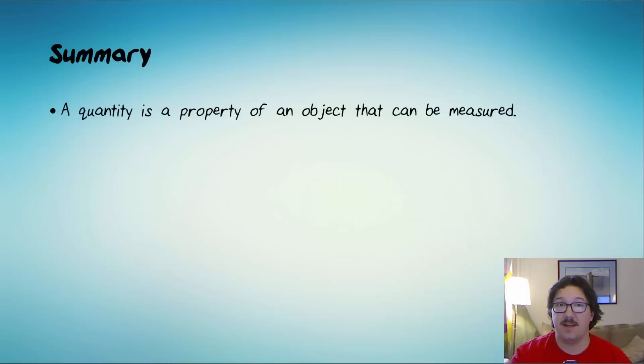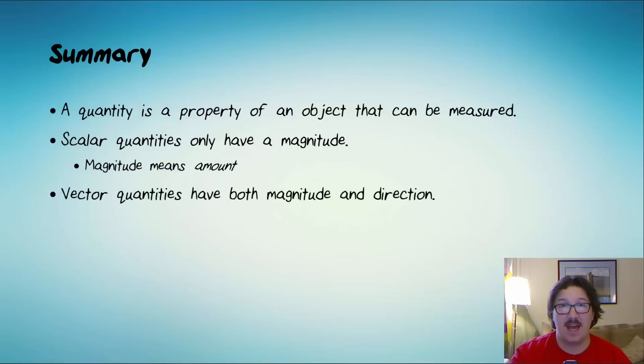Okay. Let's summarize. A quantity is a property of an object that can be measured. Scalar quantities only have magnitude. And magnitude means amount. And vector quantities have both magnitude and direction.